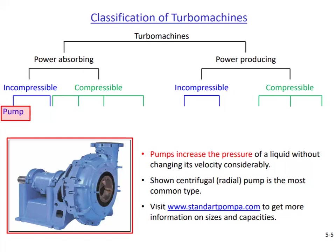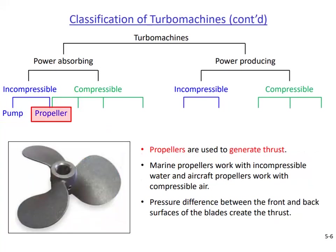Fluid enters parallel to the shaft; after being sucked in, it turns radially as it passes over the rotating blades attached to the shaft and leaves the pump in the radial direction. The main fluid motion inside this pump is radial, therefore it is called a radial pump or a centrifugal pump. We will spend most of our time in this chapter studying this pump.